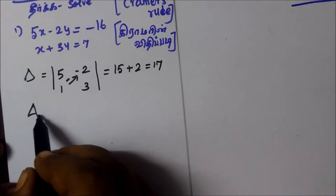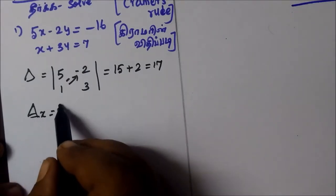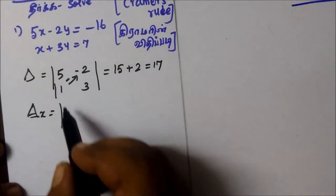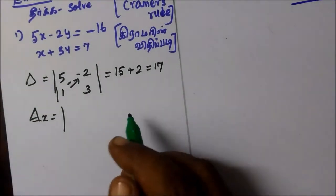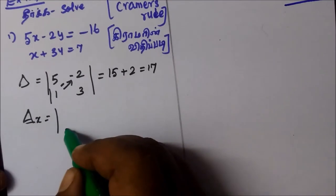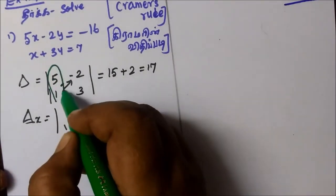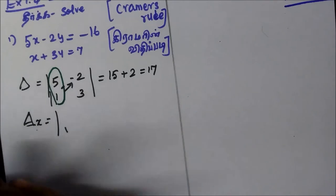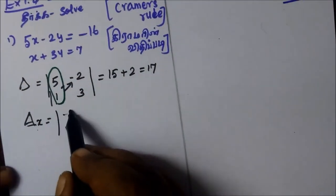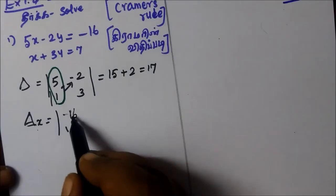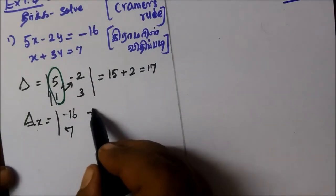Next, del x. We have the first column. We have the constant. The constant is 7. So, minus 16, then 7. This is the same as it is.